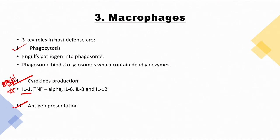The cytokines produced by macrophages include: interleukin-1 (IL-1), tumor necrosis factor-alpha (TNF-α), interleukin-6 (IL-6), interleukin-8 (IL-8), and interleukin-12 (IL-12). You must remember these, as question banks frequently ask about macrophage cytokine production. The third role is antigen presentation.